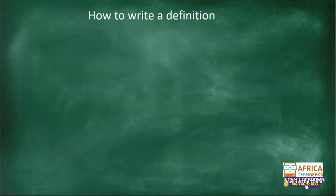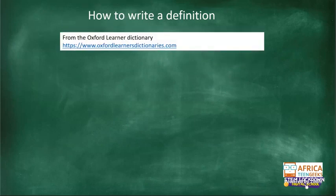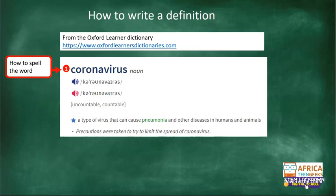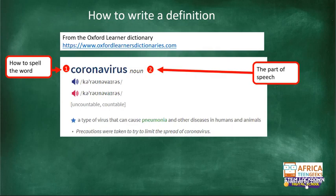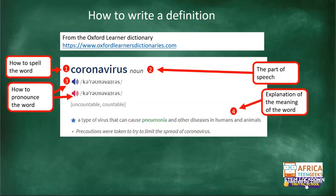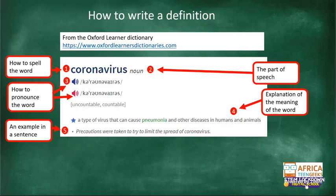I went into the Oxford Learner Dictionary online and asked for the word 'coronavirus.' They showed how to spell it, told me it's a noun — both uncountable and countable — gave two pronunciations (a man and a woman), explained the meaning: 'a type of virus that can cause pneumonia and other diseases in humans and animals,' and gave an example sentence: 'Precautions were taken to try and limit the spread of coronavirus.'